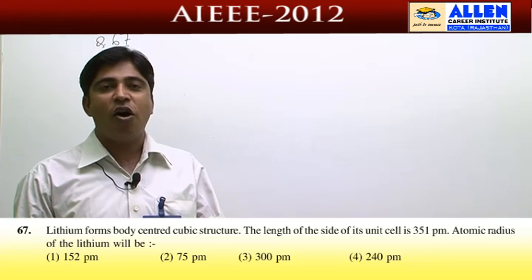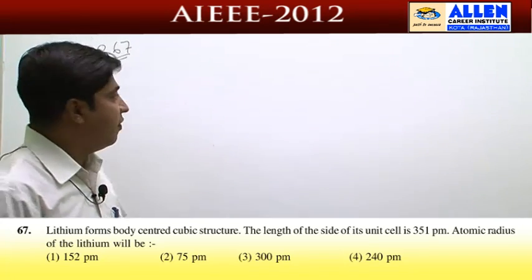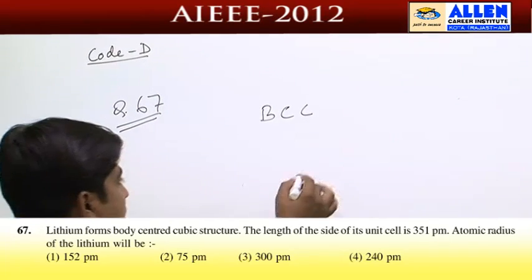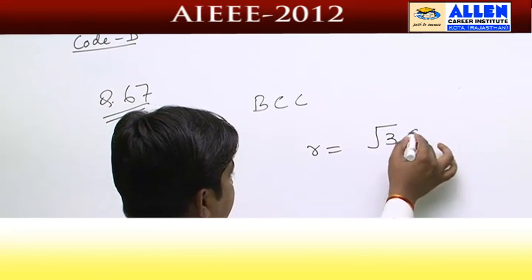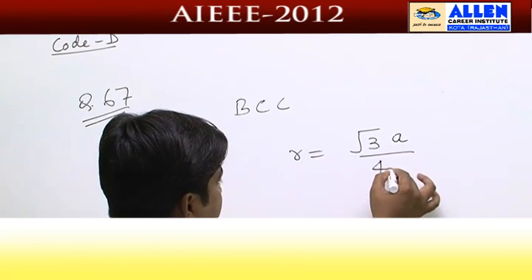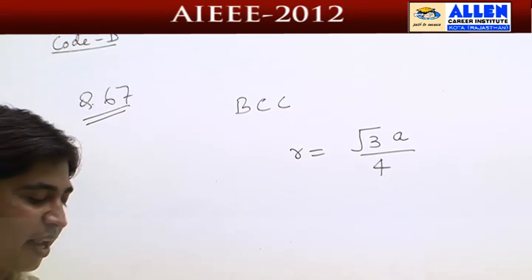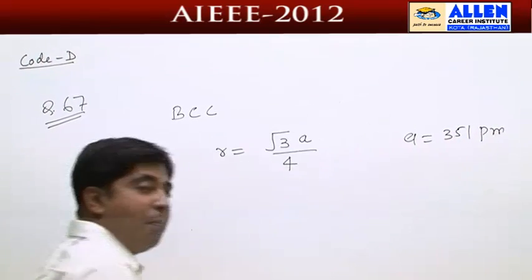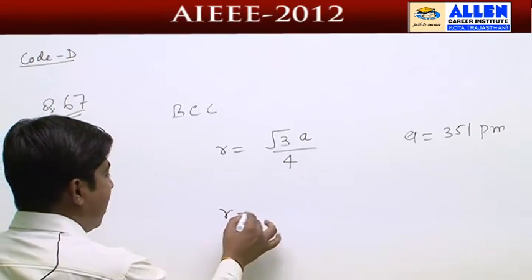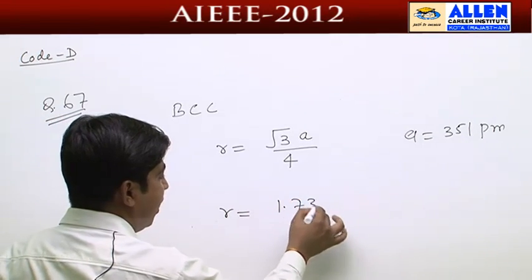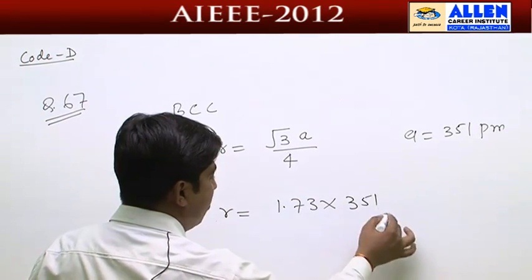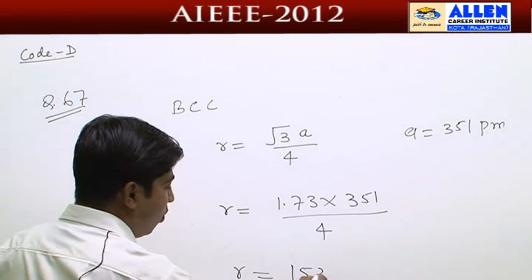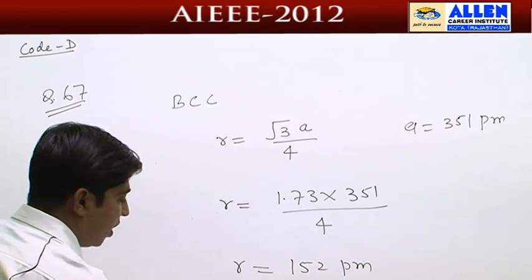We need to find the edge length and atomic radius. For BCC structure, the formula is r equals root 3 times a divided by 4. The edge length given is 351 picometers. So atomic radius equals (root 3 × 351) / 4 = (1.73 × 351) / 4, which gives radius equal to 152 picometers. This is the first option.